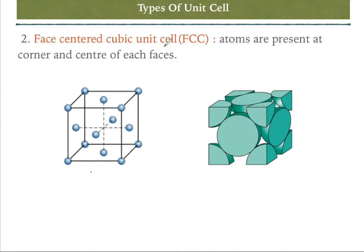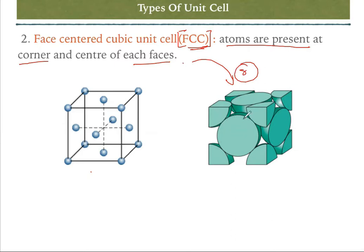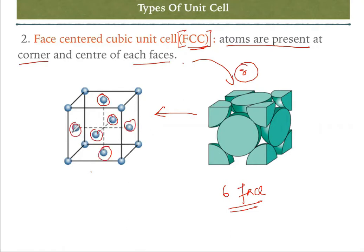The next type of unit cell is the face-centered cubic unit cell, or FCC. In the FCC, atoms are present at the corners — there are eight corners — and also at the center of each face. A cube has six faces, so atoms are present on all six faces. You can see in this bigger picture: atoms one, two, three, four, five, and six are the face-centered atoms, and the remaining are the corner atoms.